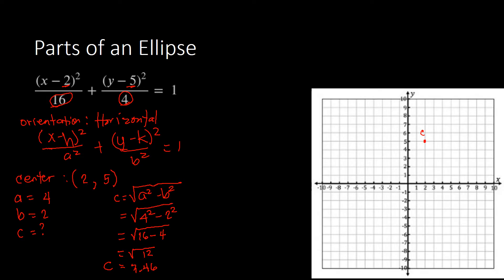Since we have the center, we locate our foci, vertices, and co-vertices. Starting with vertices: we use our measurement of a, which is 4. A is the distance from the center to the vertices. Since this is horizontal orientation, we count 4 units horizontally from the center — 1, 2, 3, 4 to the left, and 1, 2, 3, 4 to the right. Those are our vertices.